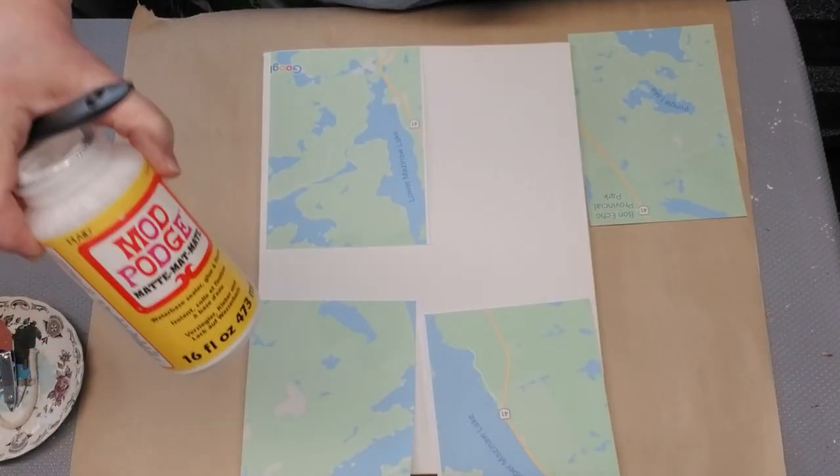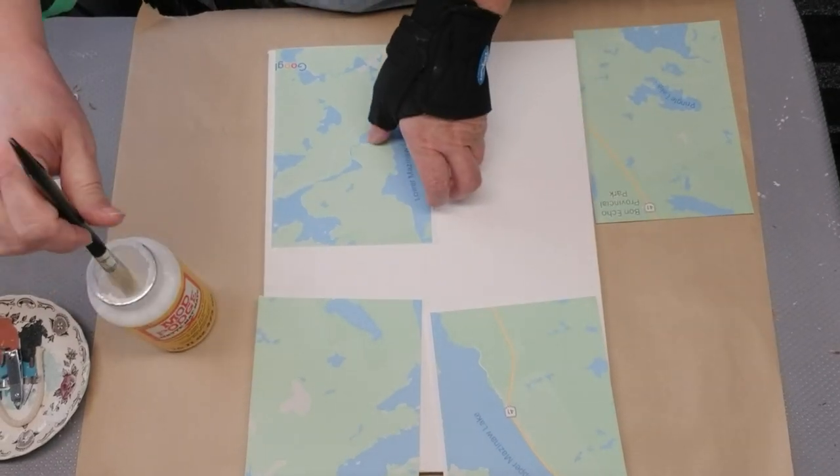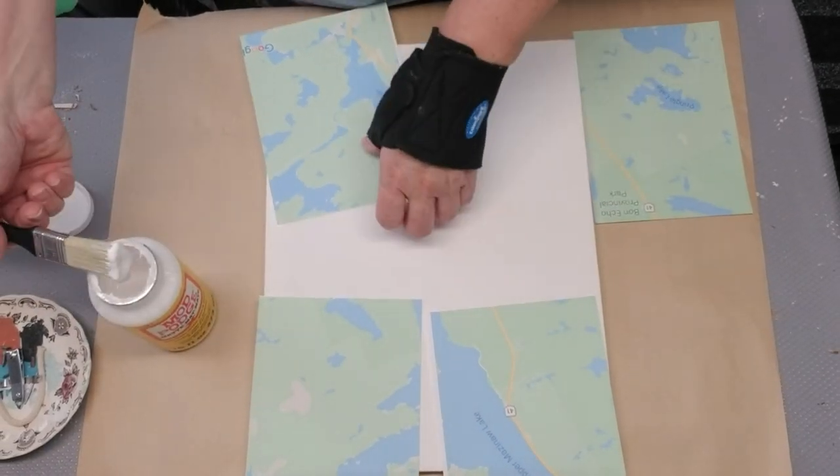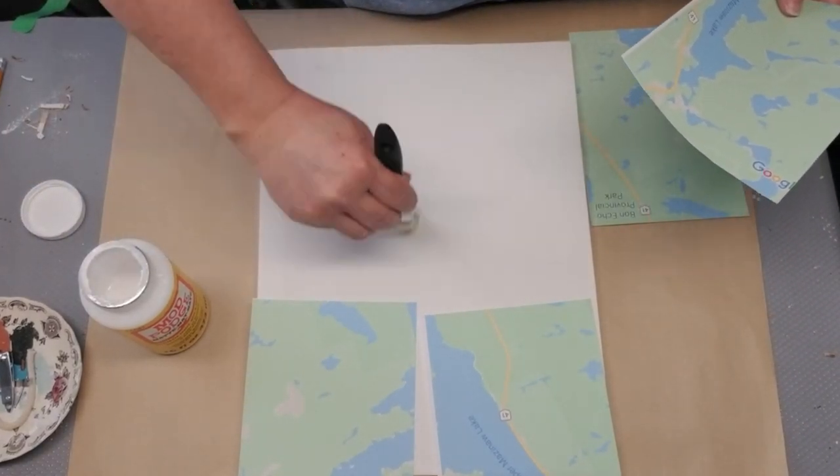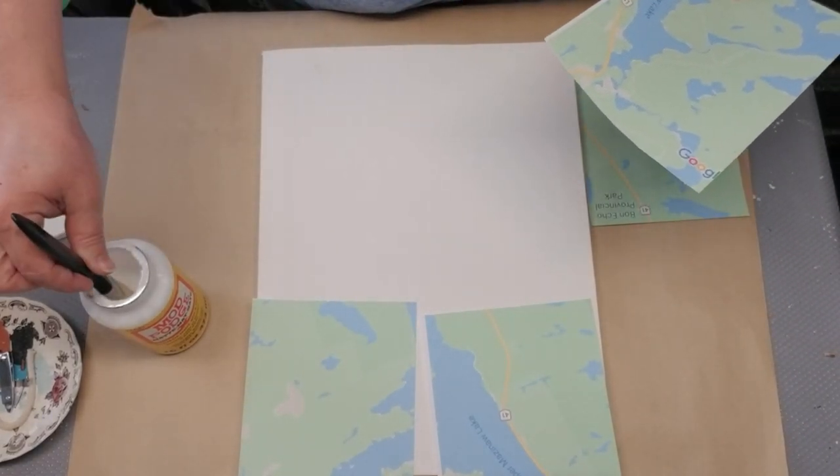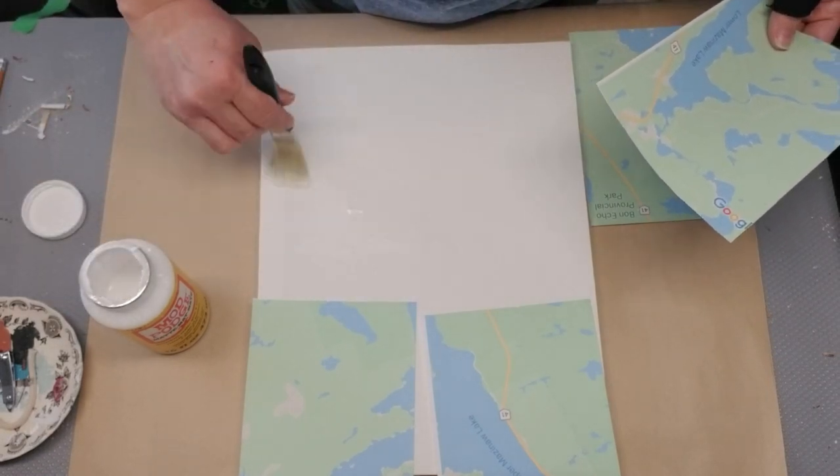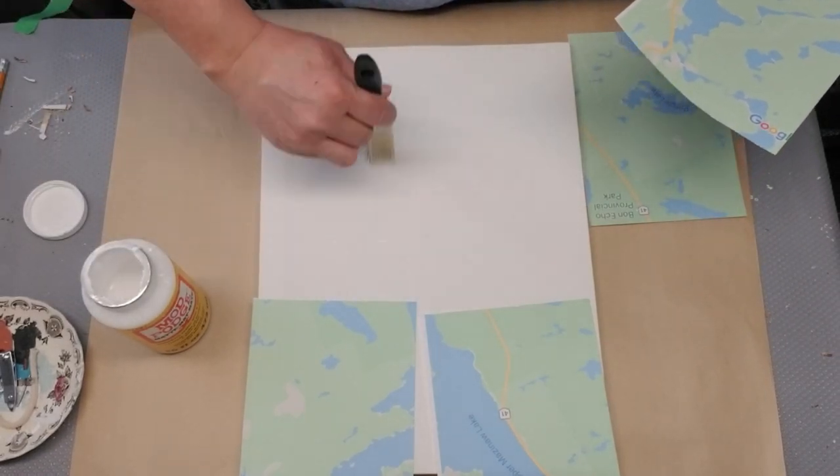I'm going to use matte Mod Podge to glue the paper onto the canvas. First I'll put a layer of Mod Podge on the canvas, making sure I get a fairly thick amount, then lay the paper on and try to work out as many air bubbles as I can.